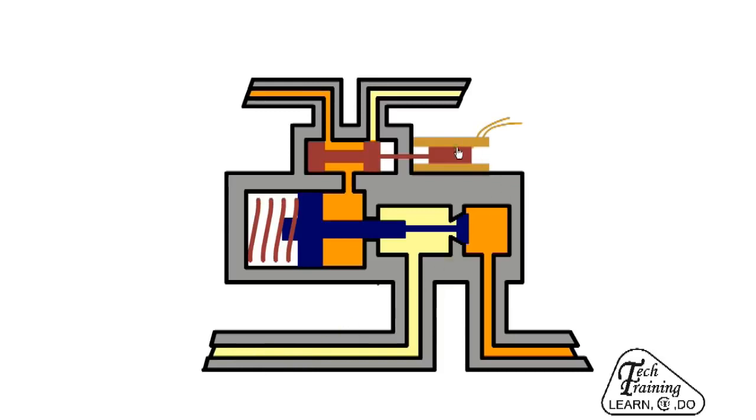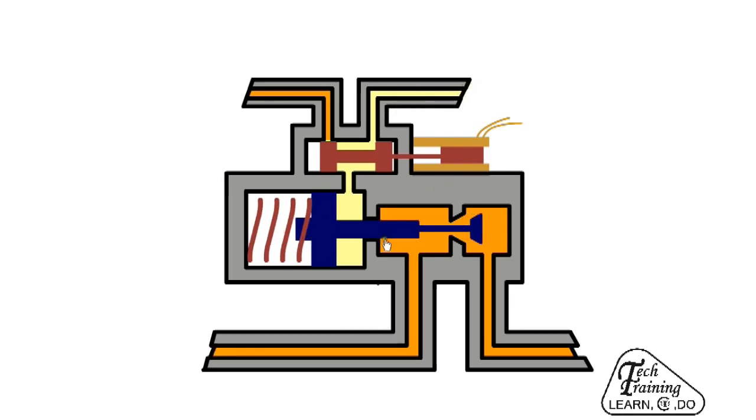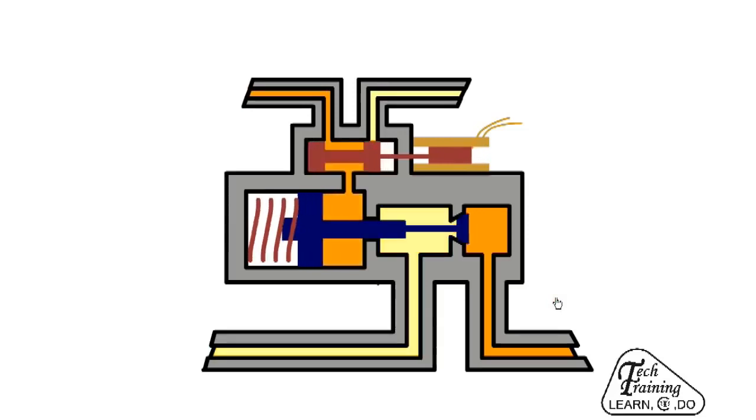When the solenoid is de-energized, the high pressure fluid is released back to the reservoir. The spring force opens the valve and the additional rod volume also increases the fluid pressure and reapplies the brakes. This cycle can happen 20 times per second and results in a pulsing sensation in the brake pedal.